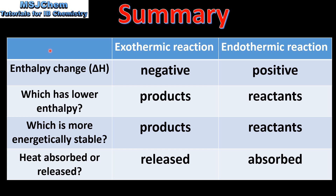Let's end with a summary. The enthalpy change in an exothermic reaction is negative; for an endothermic reaction it's positive. In an exothermic reaction the products have lower enthalpy; in an endothermic reaction it's the reactants. For energetic stability: in an exothermic reaction it's the products, and in an endothermic reaction it's the reactants.